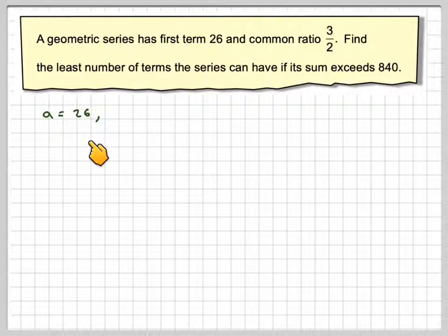So we've got A is equal to 26, R is 3 over 2.